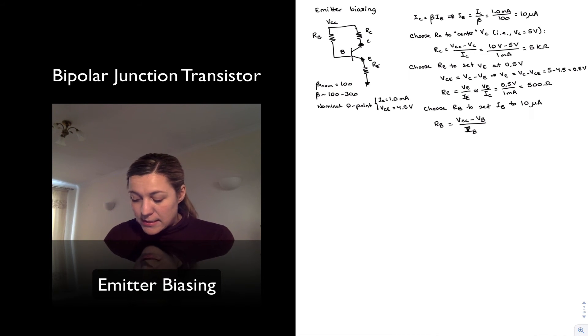Now the base voltage in this case, VB, it's going to need to be 0.7 volts plus the voltage drop across the emitter resistor. Because we need those 0.7 volts to turn on the base emitter junction plus the other voltage. So in this case, VB is equal to VE plus 0.7 volts.